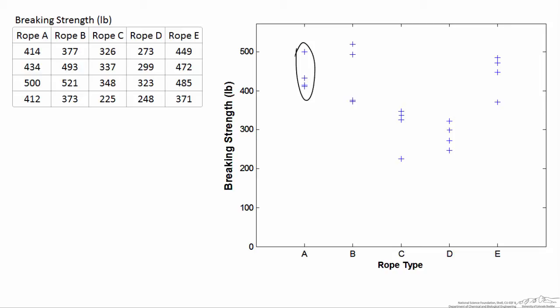What we're ultimately trying to figure out is if the mean breaking strength of one of the ropes is different from the others.